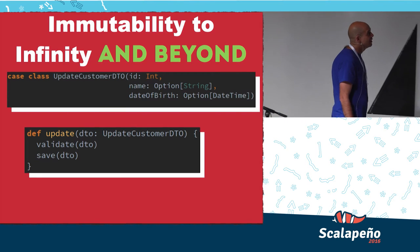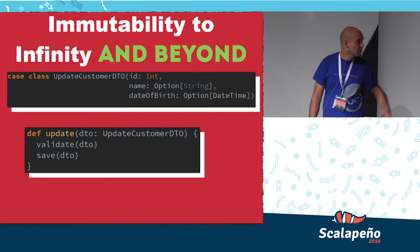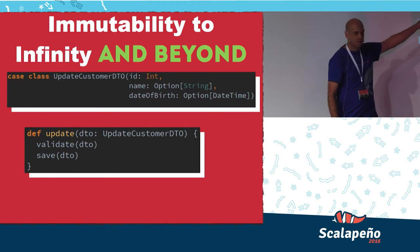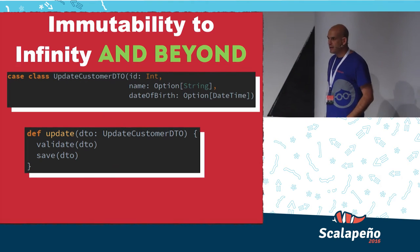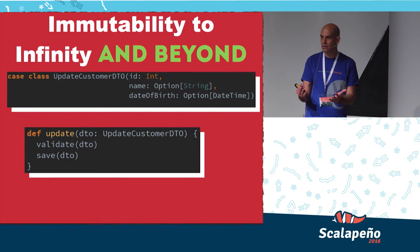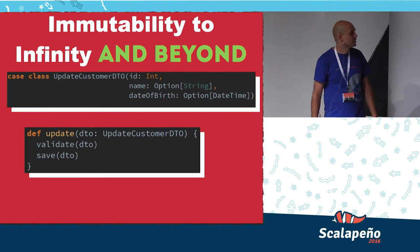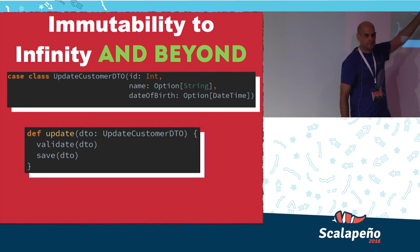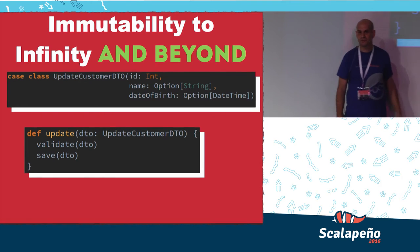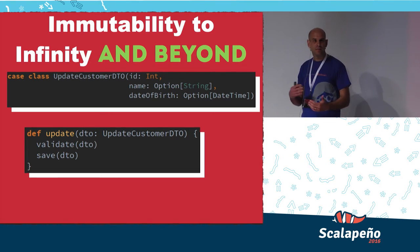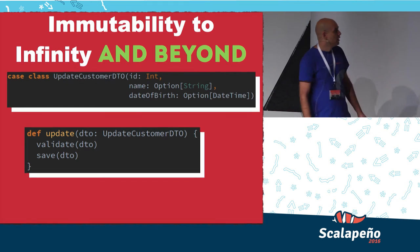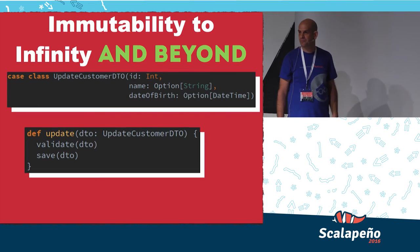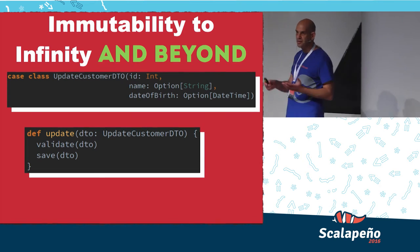Immutability — why is it important in public APIs? Take this example: we want to allow users to update a customer. We have a method that takes a DTO case class, validates it, and saves it. If you have a bug where the saved data is wrong, in Java you can never fully trust the validate method because it might mutate the object and change field values. But with Scala, case classes are immutable, so you can focus your debugging on the right places and not waste time on code paths that cannot change your object.